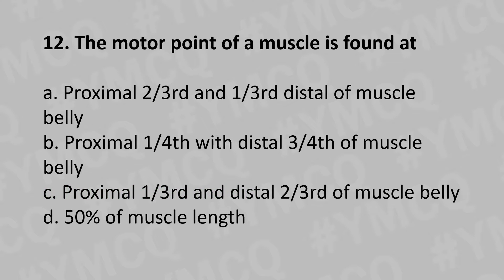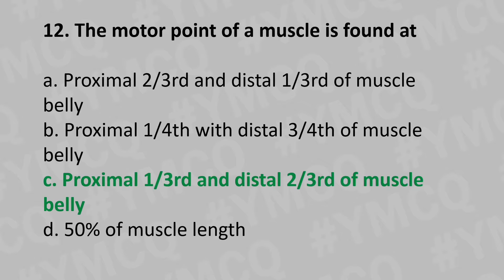Moving to our 12th question: the motor point of a muscle is found at: Option A: Proximal two-thirds and distal one-third of the muscle belly, Option B: Proximal one-fourth and distal three-fourths, Option C: Proximal one-third and distal two-thirds, Option D: 50% of the muscle length. And the answer is Option C: Proximal one-third and distal two-thirds of the muscle belly.